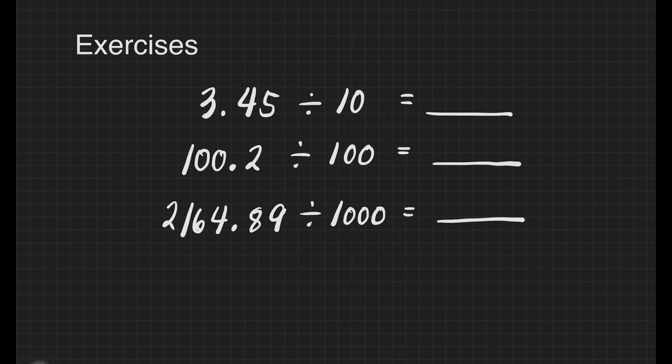We have some exercises here. For the first one, we have 3.45 divided by 10. We have one zero in our divisor. That means we will move one decimal place in our dividend. That will give us 0.345. And that is 345 thousandths.